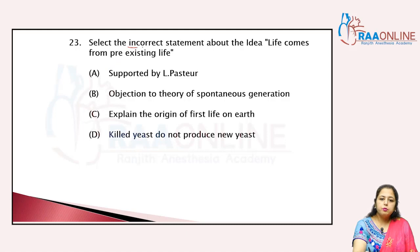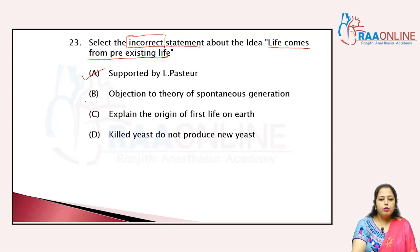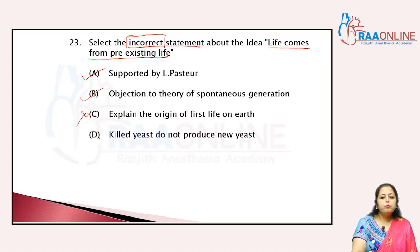Select the incorrect statement about the idea that life comes from pre-existing life. It is supported by Louis Pasteur — correct. It is an objection to the theory of spontaneous generation — correct. It explains the origin of first life on Earth — this needs evaluation. Killed yeast does not produce new yeast — correct, because non-living cannot give rise to living.